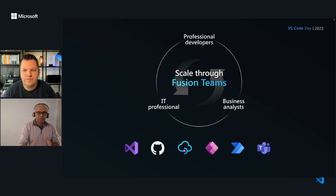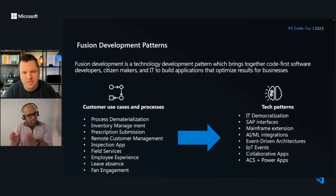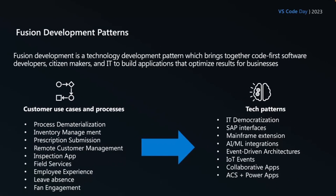Looking at patterns we're solving from a fusion development team perspective: typical use cases include process dematerialization, inventory management, and prescription submission. Tech patterns include modernizing a mainframe application, bringing in a new ML model into a chatbot, IoT applications, and so on. These use cases are no different from what you were doing before, except now we're building them a lot faster.